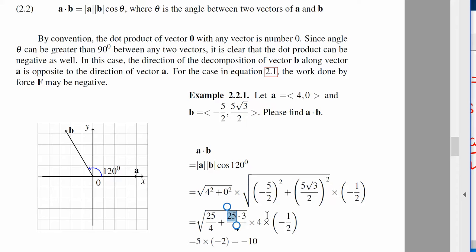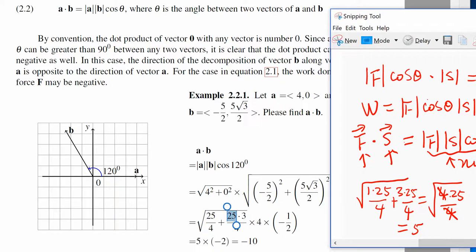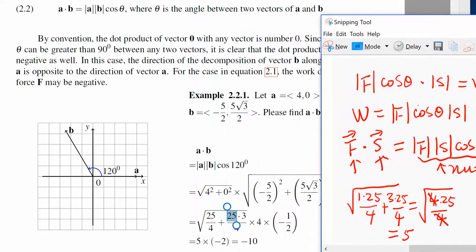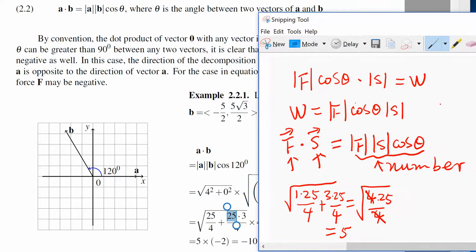So vector A dot vector B is negative 10. Here you may wonder why this is 120 degrees. Here is the reason.